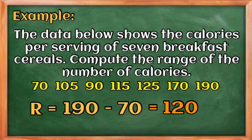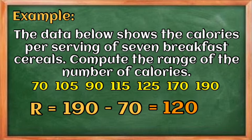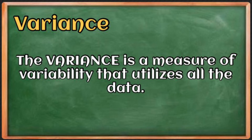The range measures the total spread in a set of data; however, it does not take into account how the data are distributed between the smallest and largest values. In other words, the range does not indicate whether values are evenly distributed throughout the data set. Thus, using the range as a measure of variation when at least one value is an extreme value can be misleading — and that is why we have the variance.